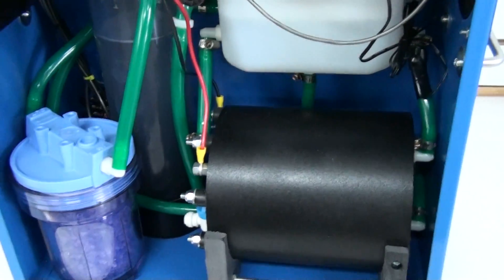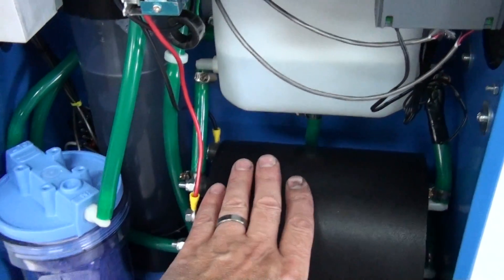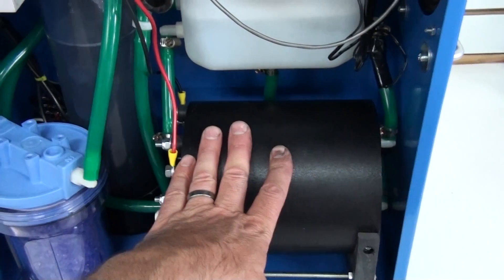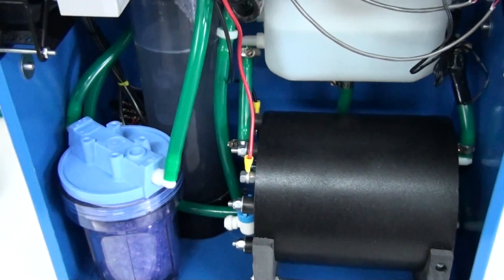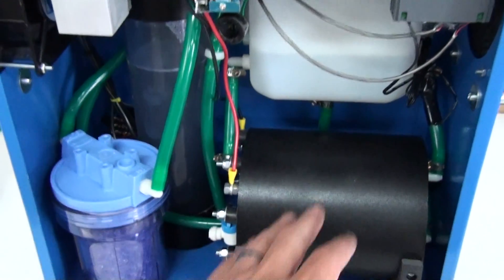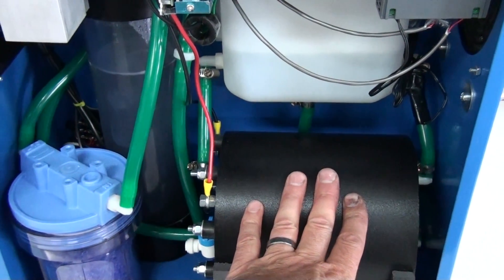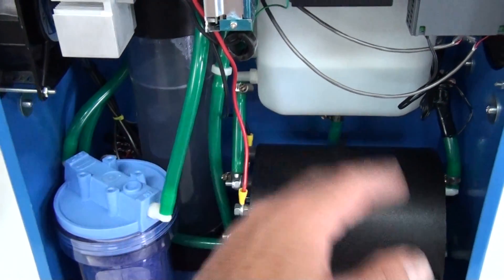This machine here mixes the hydrogen and oxygen together. That's why we call it Brown's Gas or HHO. There are other machines that separate the hydrogen and oxygen, so you can get hydrogen on one side and oxygen on another.